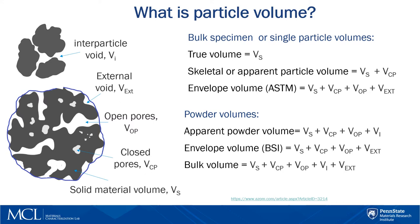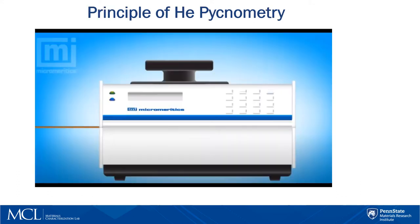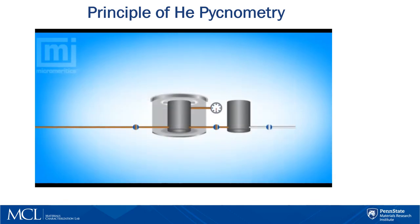Helium pycnometry measures particle skeletal volume, which includes material volume and also the volume of closed pores. Helium is typically the gas of choice because it easily diffuses into small pores. The helium pycnometer works by measuring the amount of gas displaced by a sample.